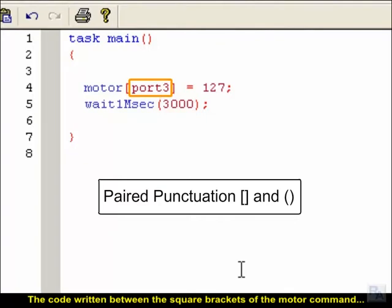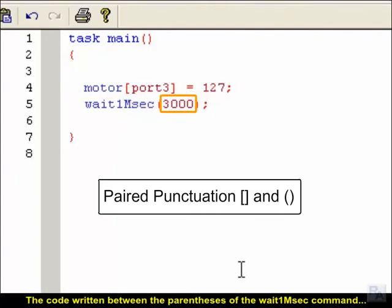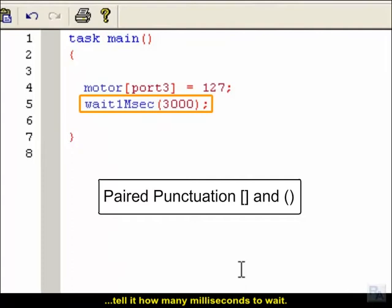The code written between the square brackets of the motor command indicates what motor the command should use. The code written between the parentheses of the wait1msec command tells it how many milliseconds to wait.